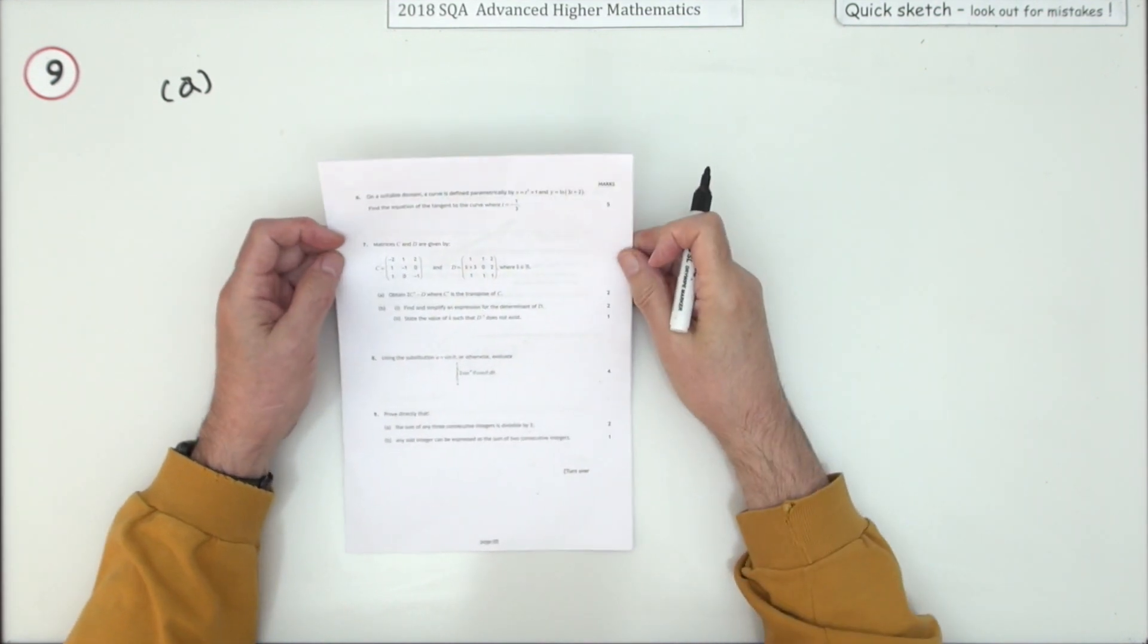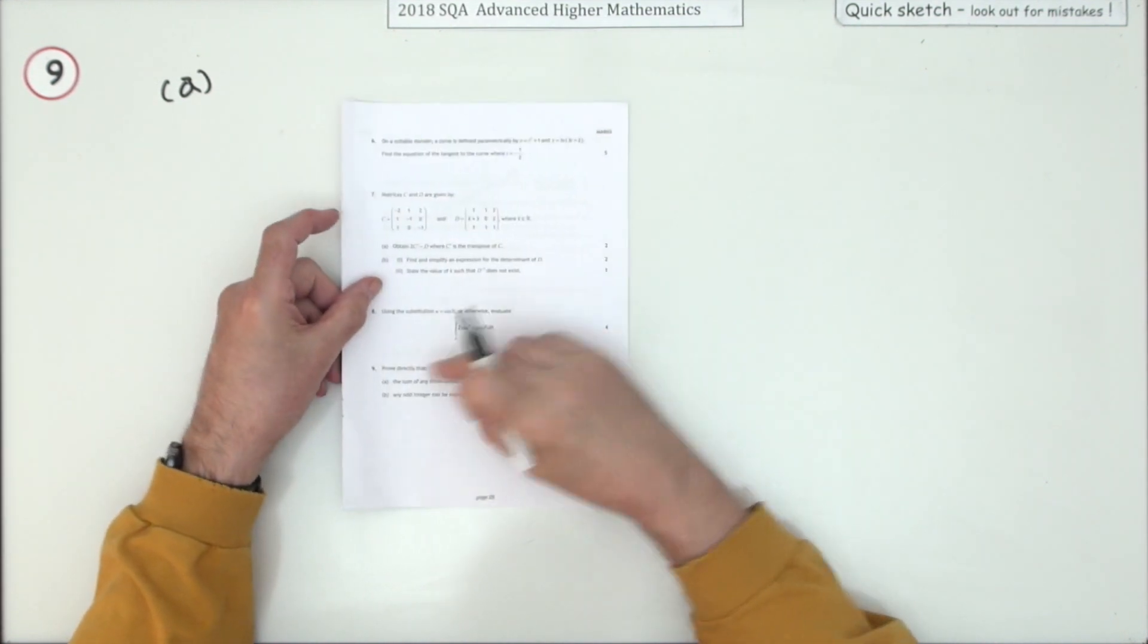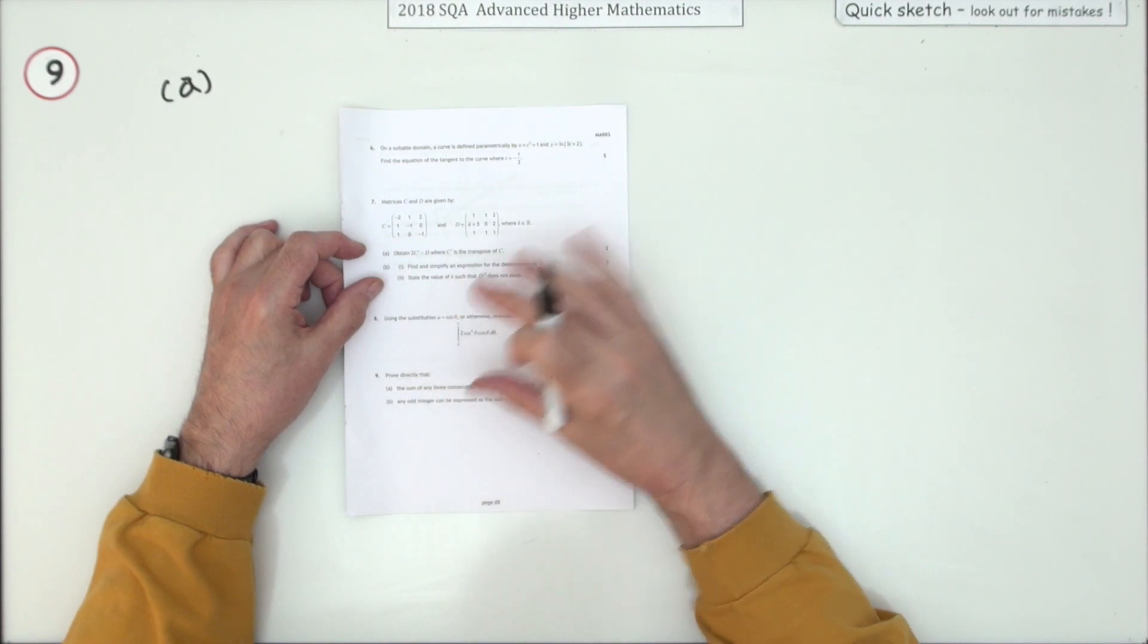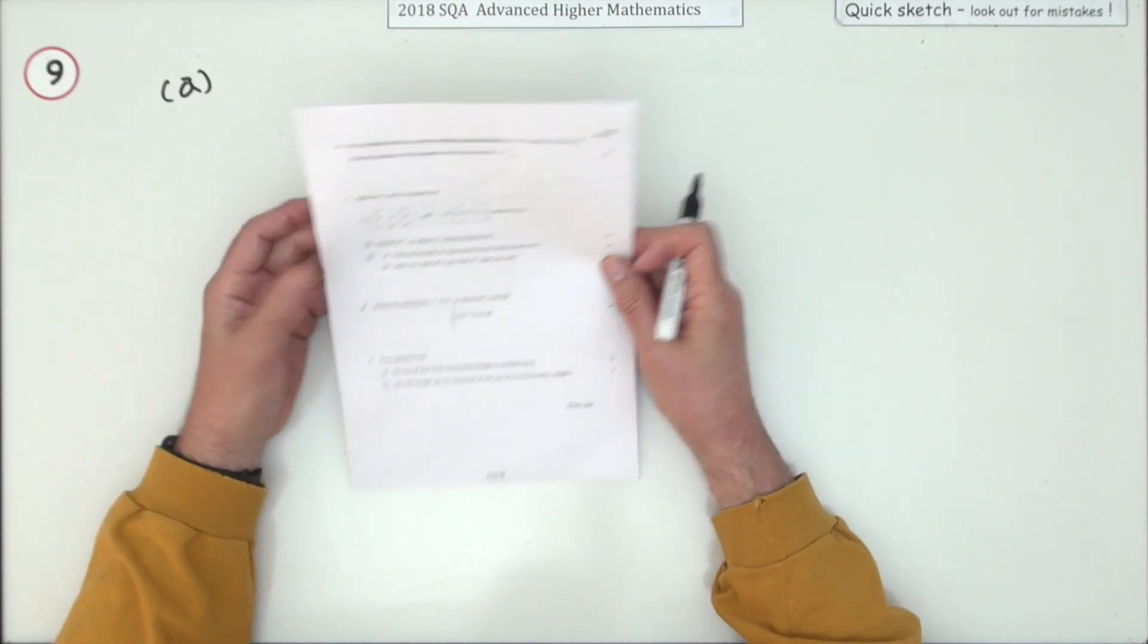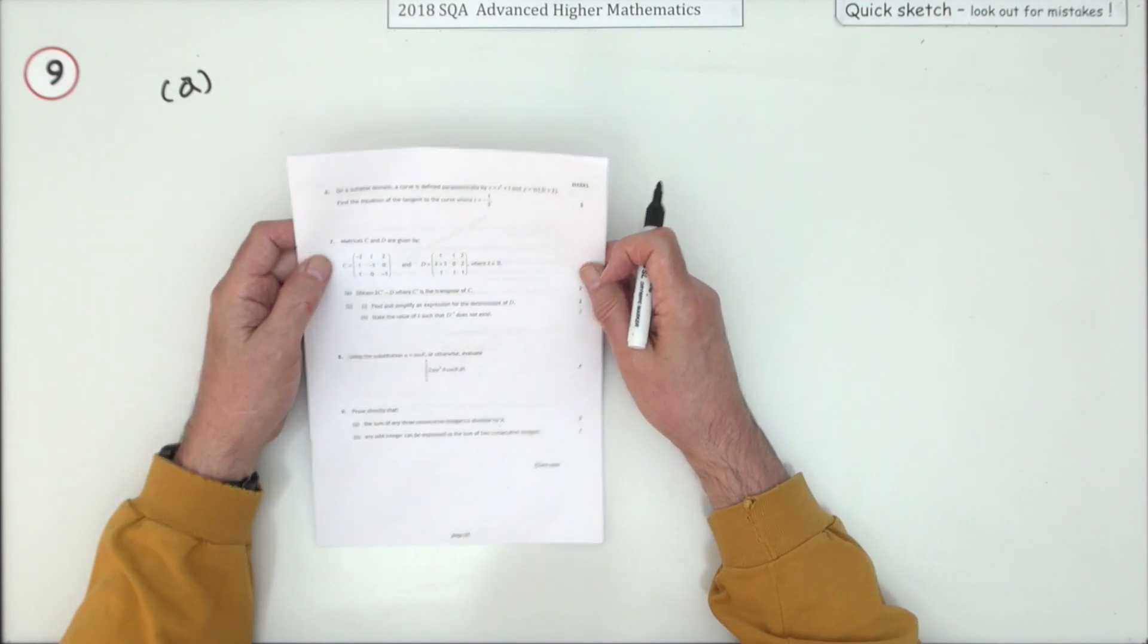Number nine from the 2018 Advanced Higher Maths. A proof question, but it's a direct proof. Usually it's an indirect proof for the Advanced Higher. A direct proof is just what you've always done really, isn't it?